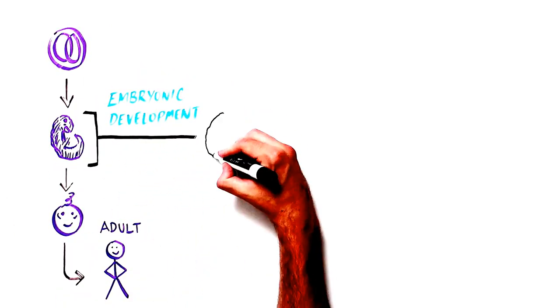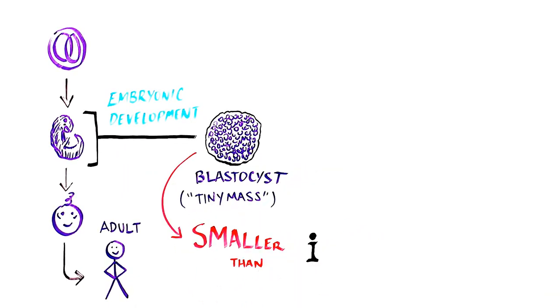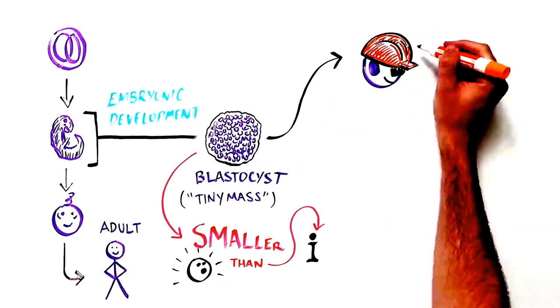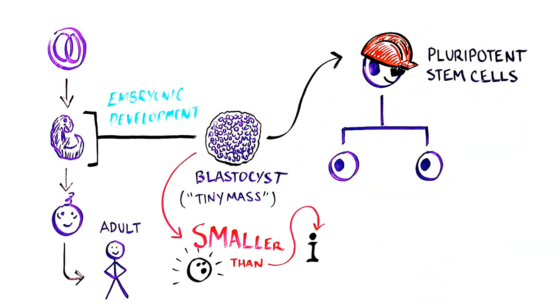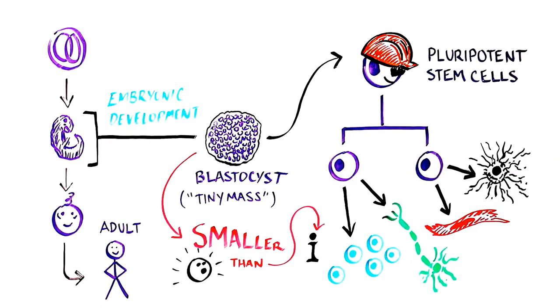In the earliest stages of the construction project, embryonic development, pluripotent stem cells are clustered in a microscopic mass smaller than the size of the dot over an eye, called a blastocyst. Alas, these pluripotent stem cells only exist for a few days. By the time we are born, they are long gone. But they are critical for proper construction of the body plan.